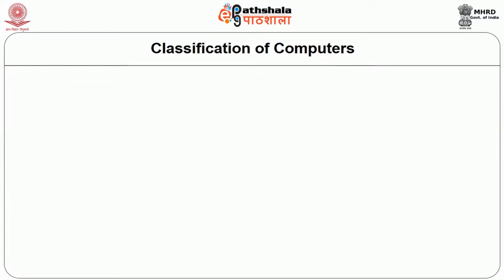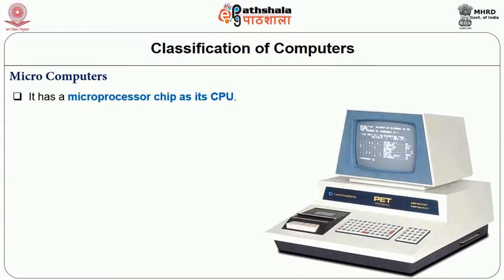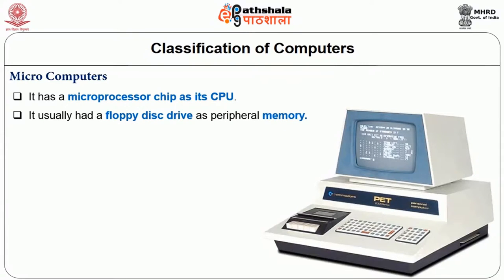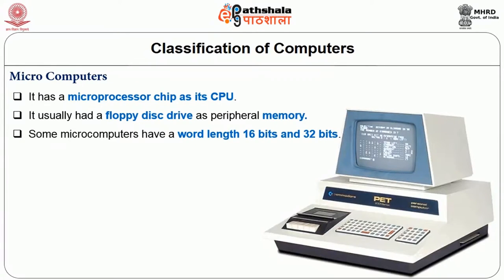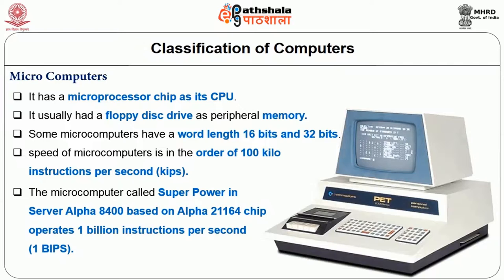Microcomputers have a microprocessor chip as their CPU, and usually had a floppy disk drive as peripheral memory. Some microcomputers have a word length of 16 bits or 32 bits. The speed of microcomputers is in the order of 100 kilo instructions per second (KIPS). The microcomputer called super power server Alpha 8400, based on the Alpha 21164 chip, operates at 1 billion instructions per second (1 BIPS).